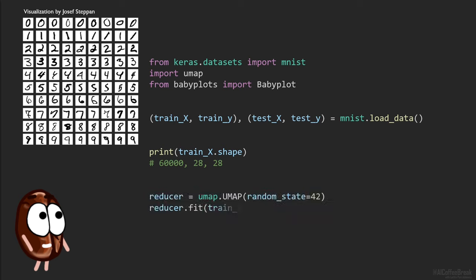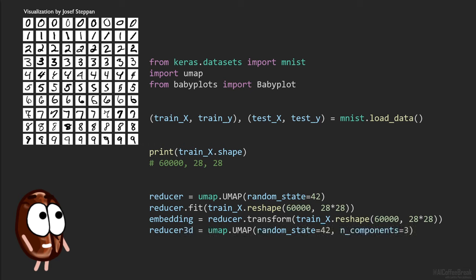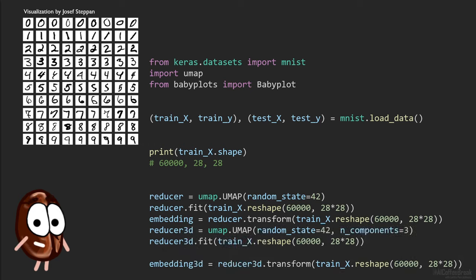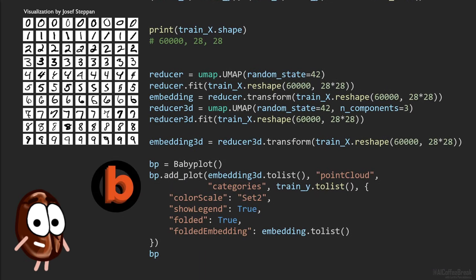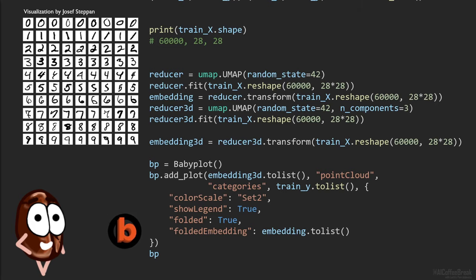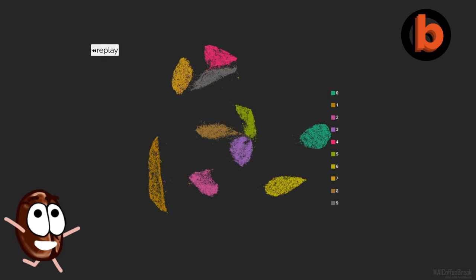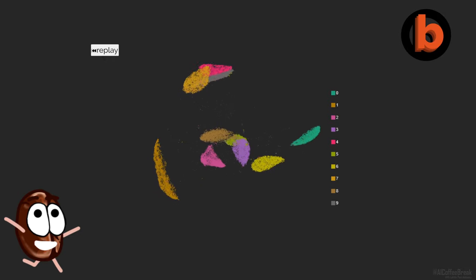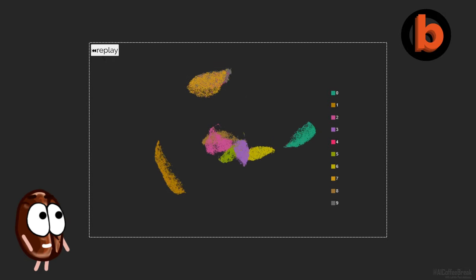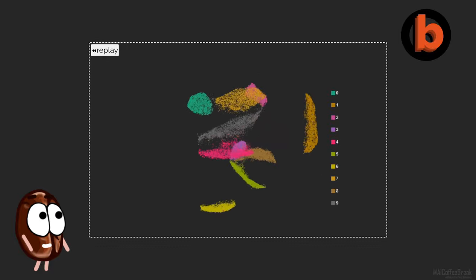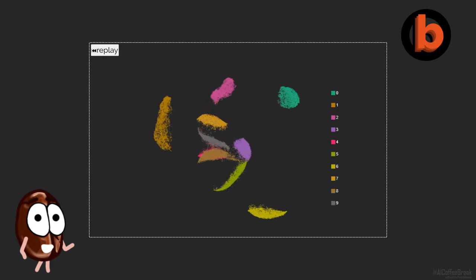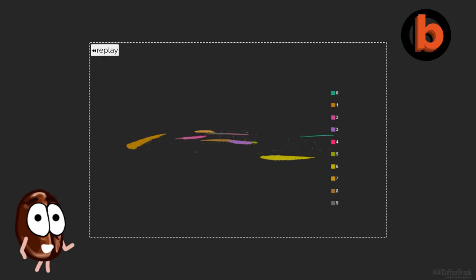For reducing, we fit and apply the UMAP algorithm and we do it once for 2 dimensions and again for 3 dimensions. We reduced to 2D and 3D to show you what the cool thing Plotly can do. It takes both the 3D and 2D embedding and can animate a transition between the two. How cool is that? Hereby we can see that UMAP could already cluster almost all handwritten digits together, meaning that UMAP here worked as an unsupervised clustering algorithm.